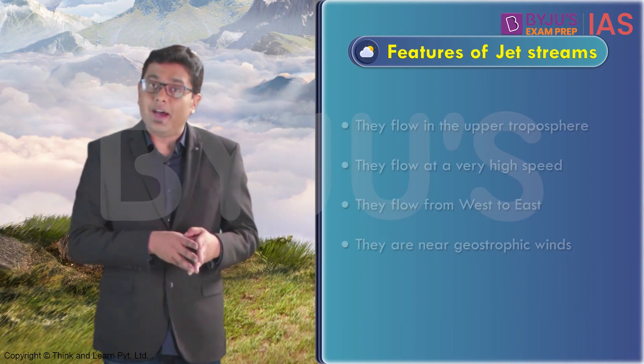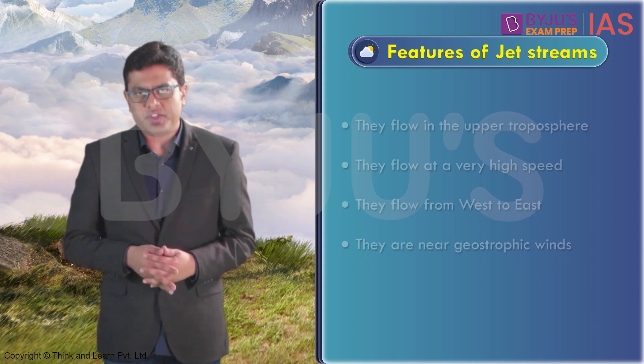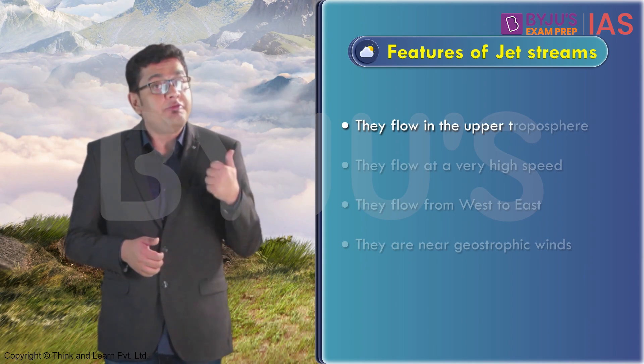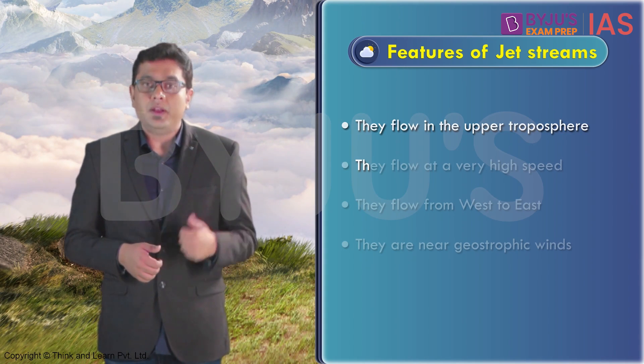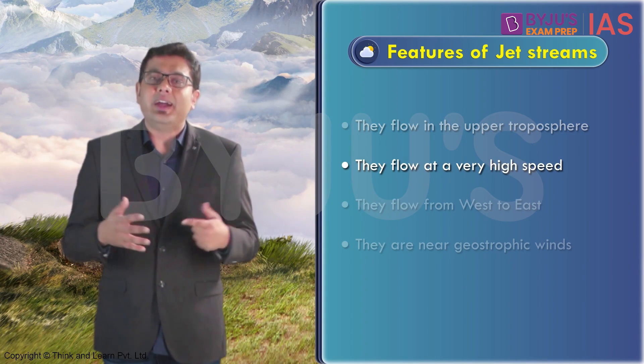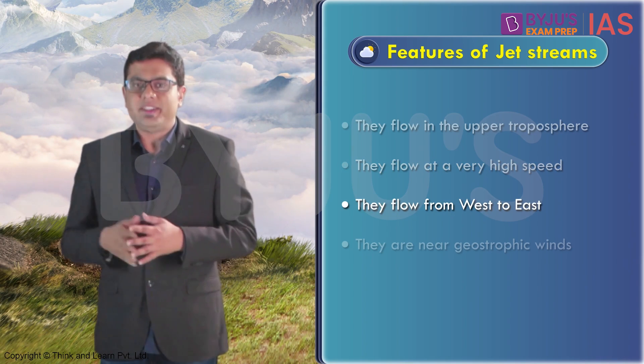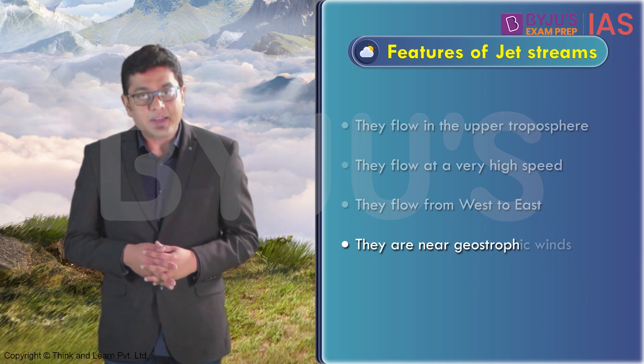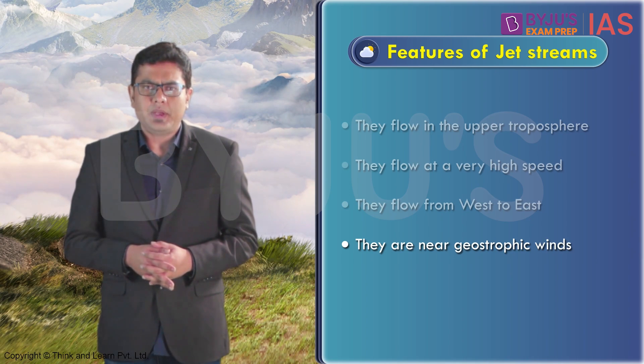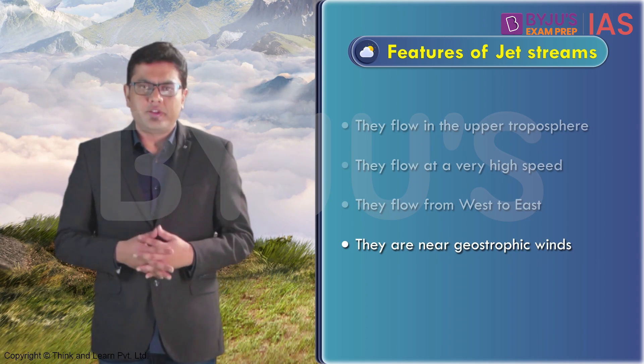We are now clear with the process of formation of jet streams. Now let's move on and discuss some of the other features generally associated with these jet streams. Till now we have learned the following: number one, they flow in the upper troposphere; number two, they flow at a very high speed; number three, they flow from west to east; and number four, they are near geostrophic winds. Now let's explore some more features of these winds.